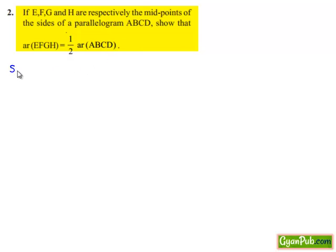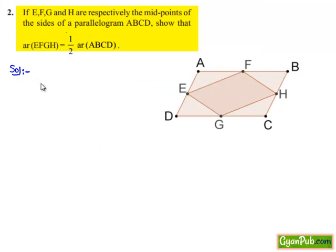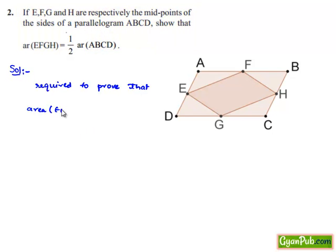Now moving on to the solution. Let us consider a parallelogram ABCD with midpoints E, F, G, H on the sides AB, BC, CD, and DA respectively, as shown in the figure. We are required to prove that the area of EFGH is equal to half times the area of ABCD.